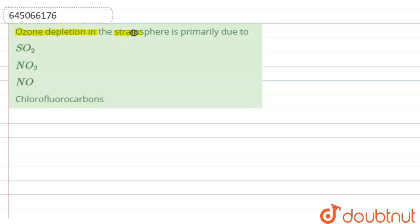Hello everyone, in this question: ozone depletion in stratosphere is primarily due to SO2, NO2, NO, or chlorofluorocarbons. So let's find out the correct reason for that.